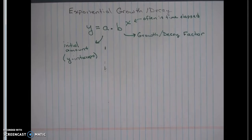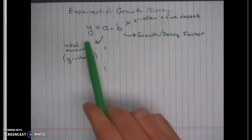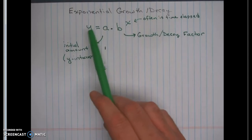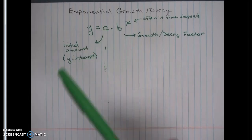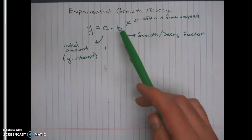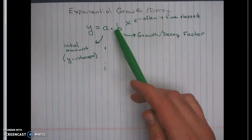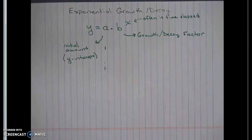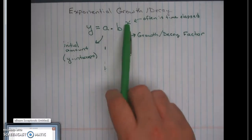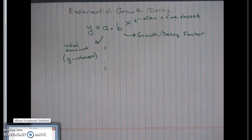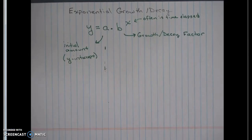If you remember the most basic exponential function, it looks something like y equals — sometimes it's money equals or something — a times b to the x. That first number is your initial amount, how much you start with. The base of the exponent is what we call the growth or decay factor. And whatever power we raise to, that's often the time that's elapsed, but sometimes it can be different things.